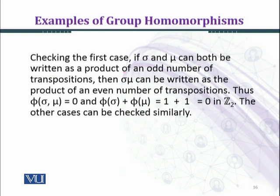Written as a product of an odd number of transpositions, then sigma mu can be written as the product of even number of transpositions. Thus, phi(σμ) equals zero. Phi sigma into mu equals zero.